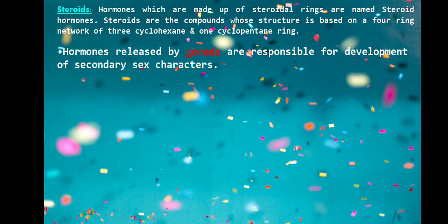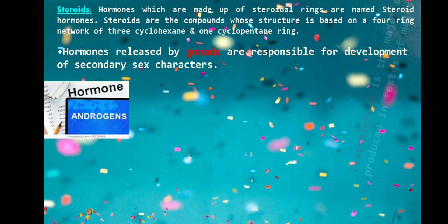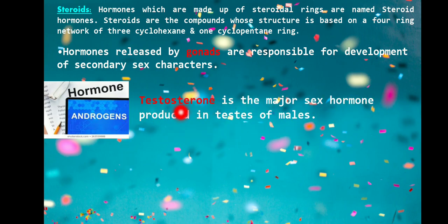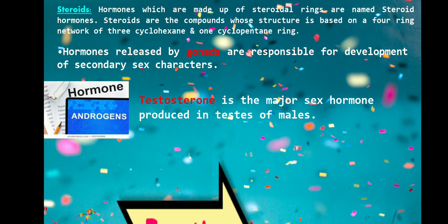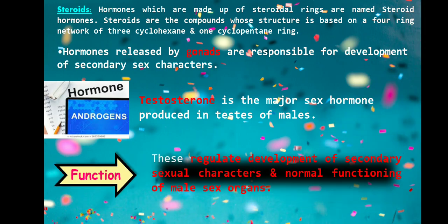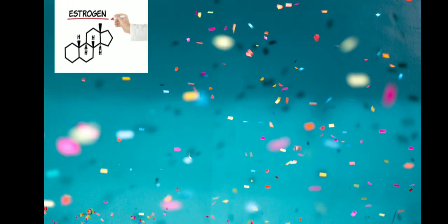In our study, two types of steroidal hormones are mentioned — both released by the gonads and responsible for development of secondary sexual characters. First are androgens: for example, testosterone, the major sex hormone produced in the testes of males. Androgens regulate the development of secondary sexual characters and normal functioning of male sex organs.